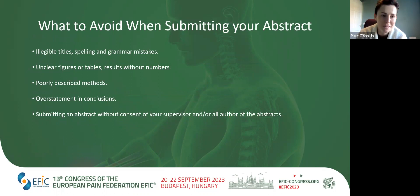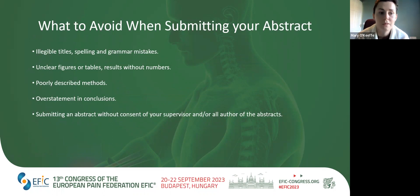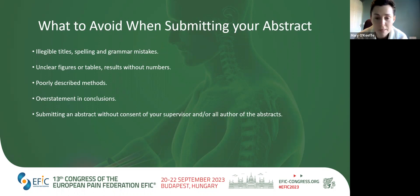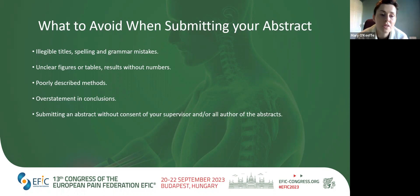Now, things to avoid — these are the opposite of the top tips. First, a title that is unreadable or not understandable, where it's hard to know from the title what you're planning to investigate. Second, spelling and grammar mistakes — make sure a peer proofreads the abstract or read it a number of times so it's correct from a grammar and spelling perspective.